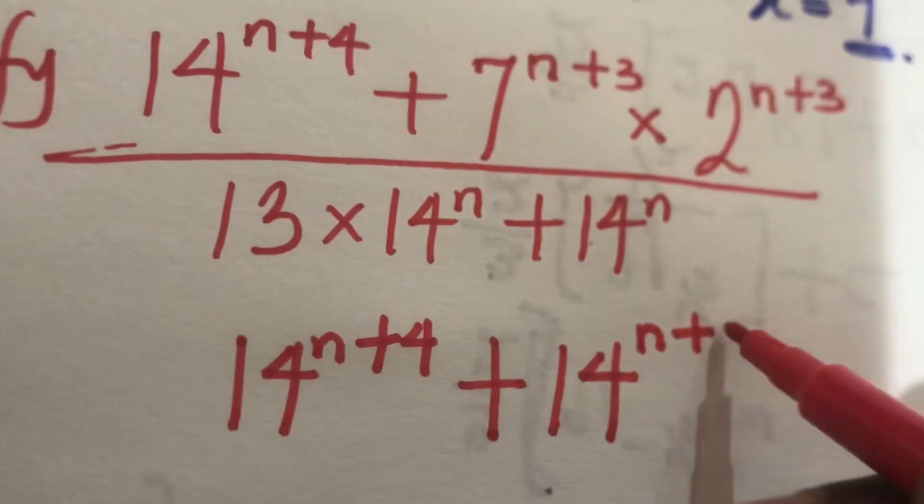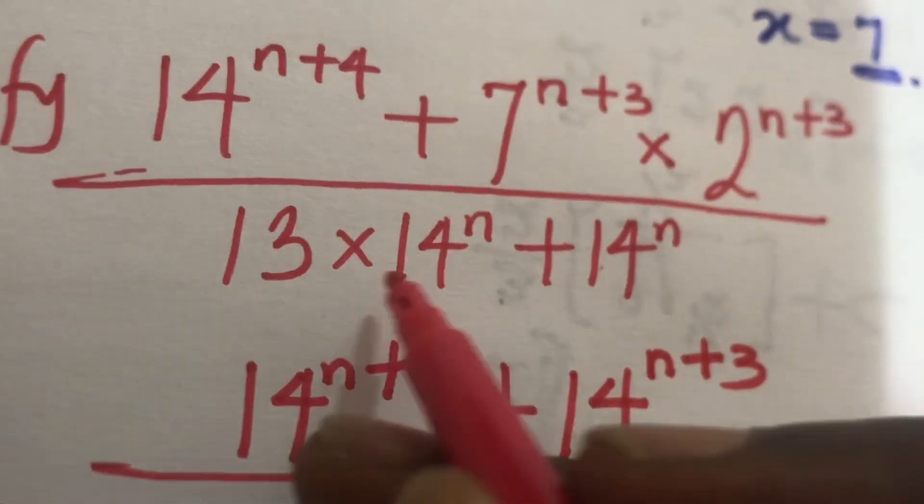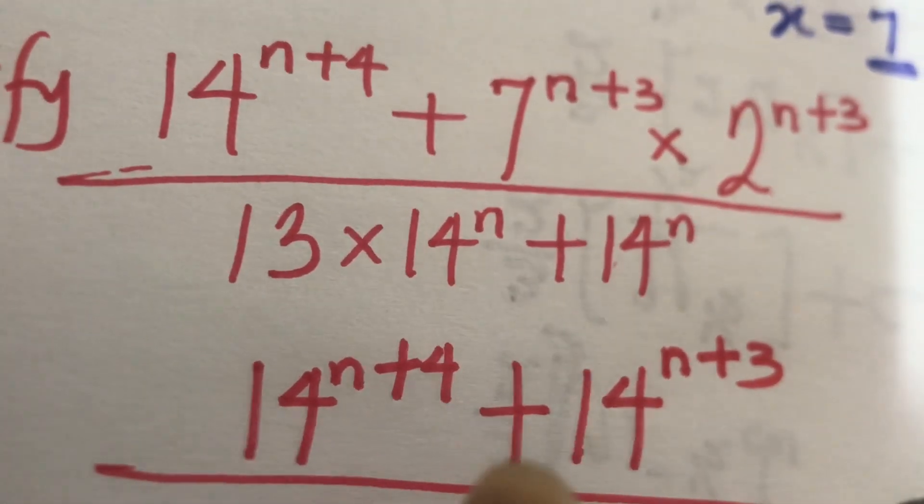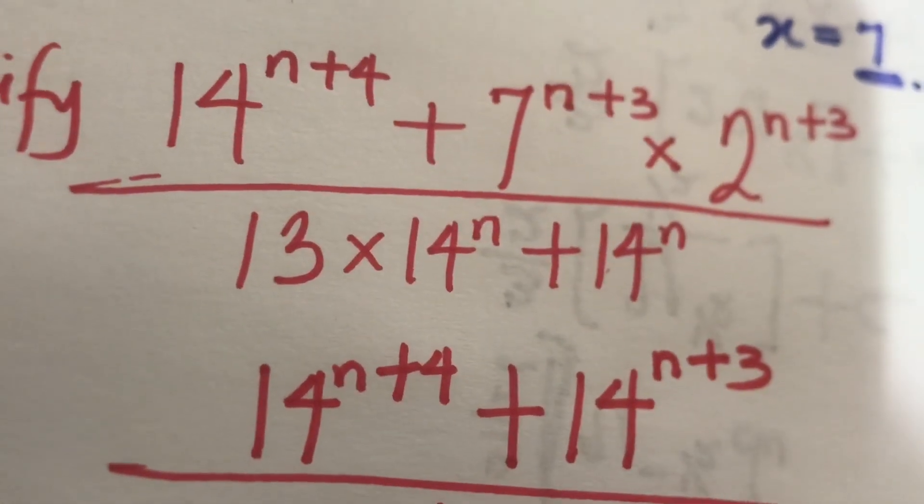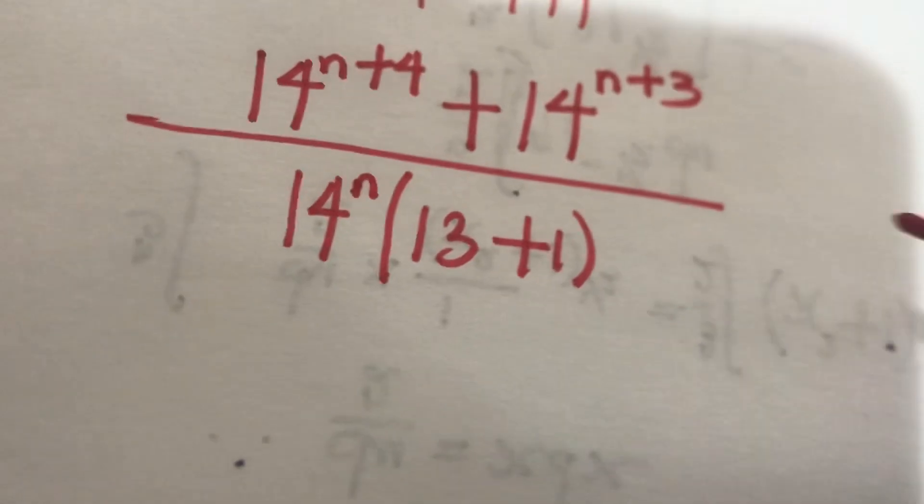We pick the power n plus 2 all over. So 14 to the power n is common here, you pick out one of it so we have 13 plus 1 left.